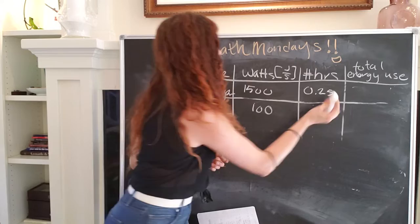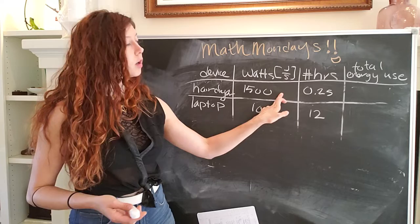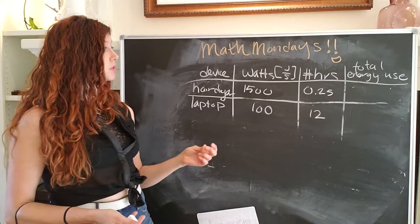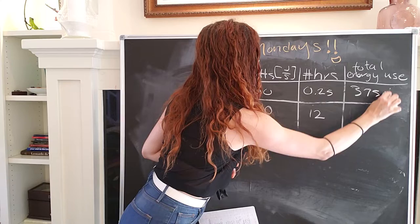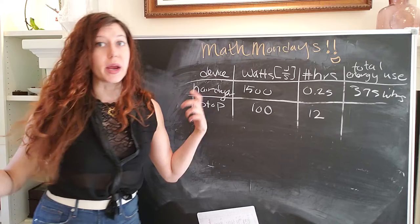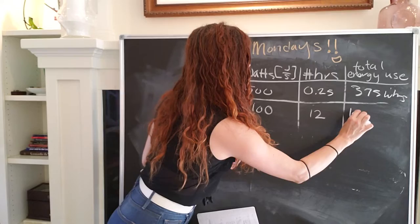So the total energy consumption is the power used by the device times the number of hours per day that it is being used. And so in this case, our hairdryer is using about 375 watt hours per day, whereas our laptop is actually using way more because it's on for a much longer period of time. And so the total energy use of our laptop is about 12,000 watt hours per day.